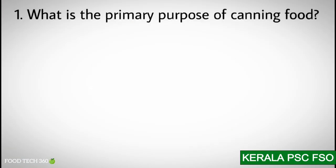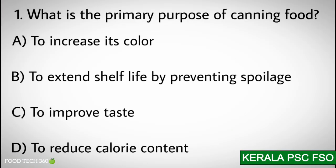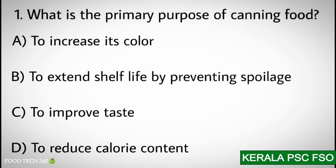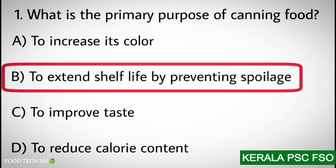Q1. What is the primary purpose of canning food? Options: A) To increase its color, B) To extend shelf life by preventing spoilage, C) To improve taste, D) To reduce calorie content. Correct answer: B) To extend shelf life by preventing spoilage.